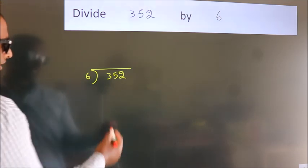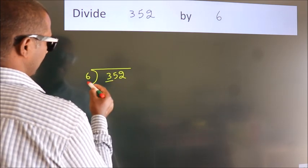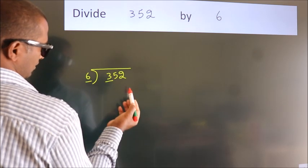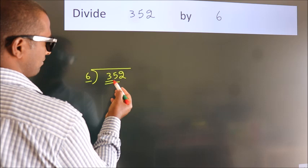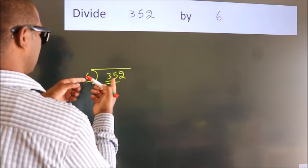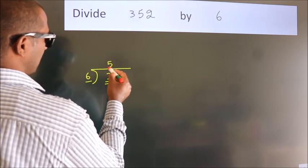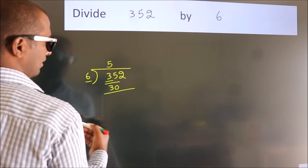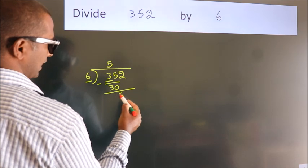Next, here we have 3, here 6. 3 is smaller than 6, so we should take two numbers, 35. A number close to 35 in the sixth table is 6 fives, 30. Now we should subtract. We get 5.